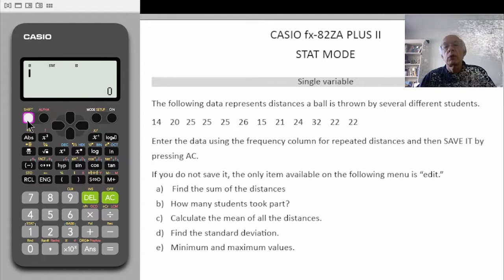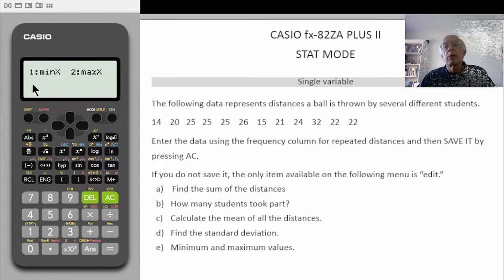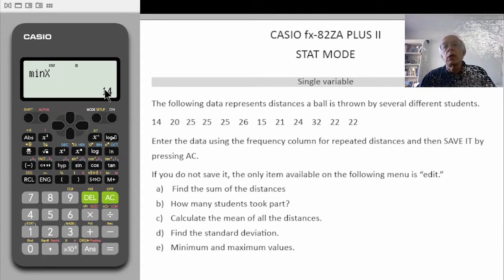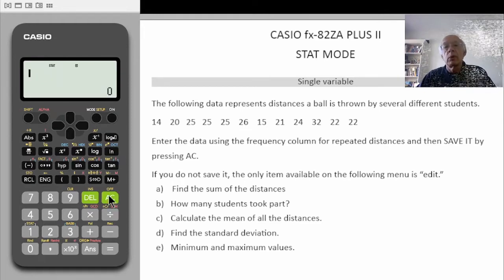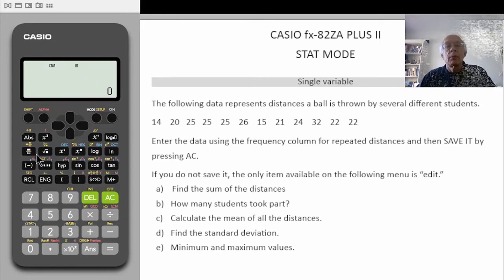The last one: the minimum and maximum values. There again we press shift, stat, another 5, min/max. Select 5 and you have an option. Let us have a look at the minimum value — select 1, equals, and it is 14. If you look at the data, you will see that 14 is the minimum value. To recap, we need to go to the stats mode and then we can enter the data. If you have any queries or questions, please do not hesitate to contact us. Thank you.